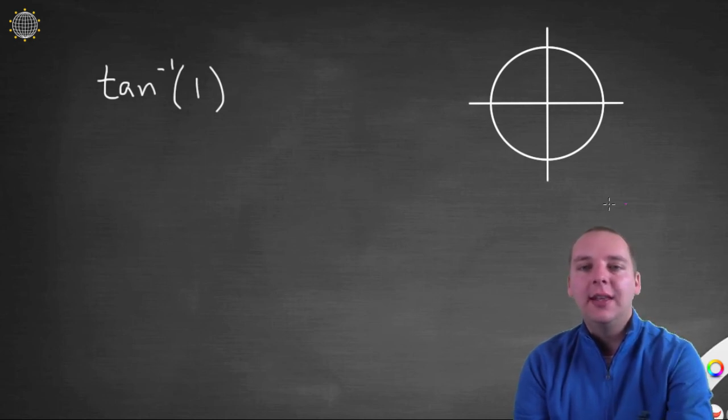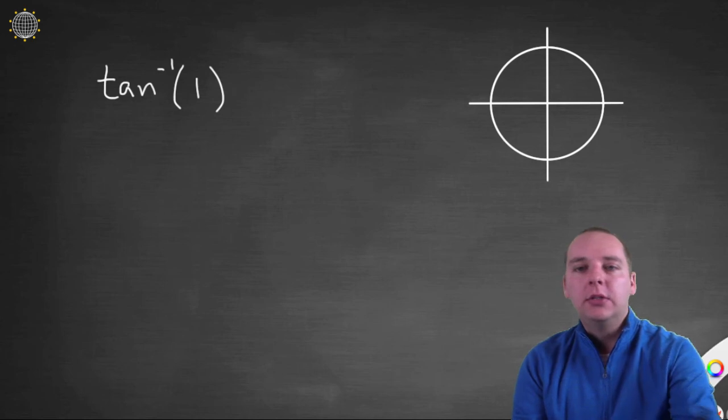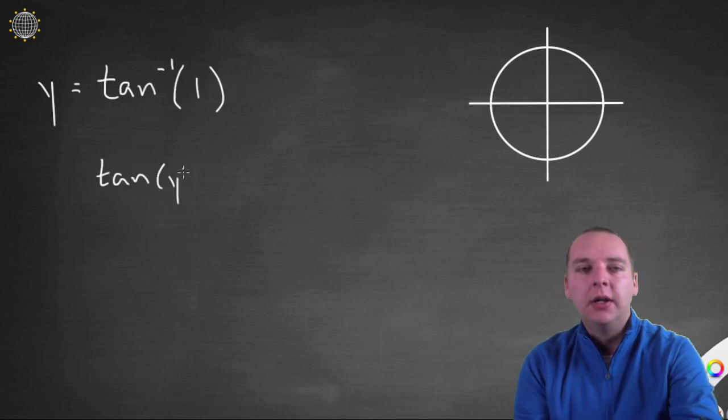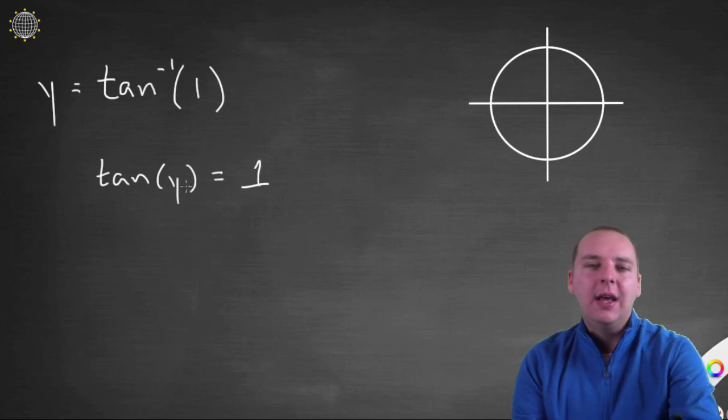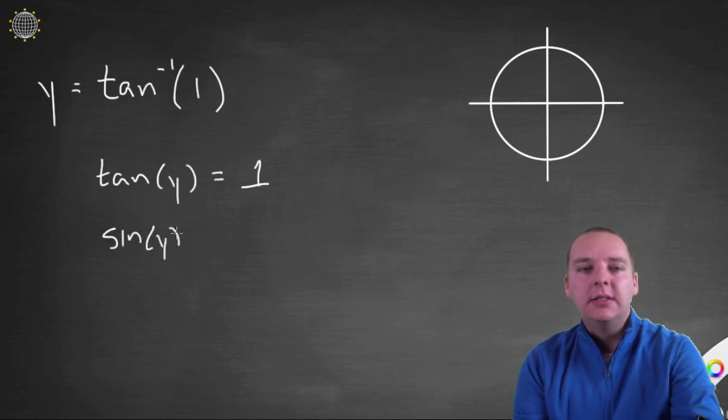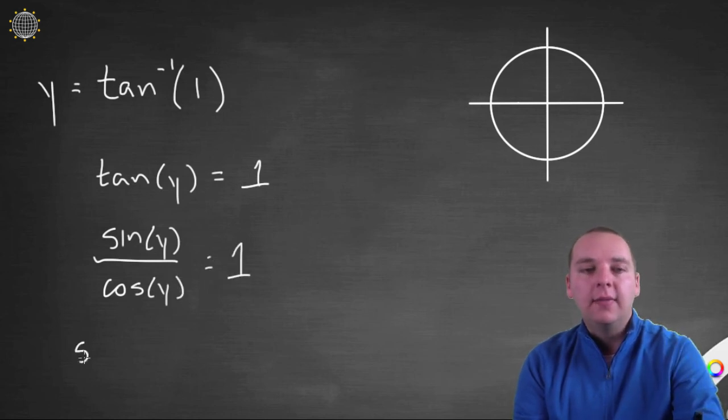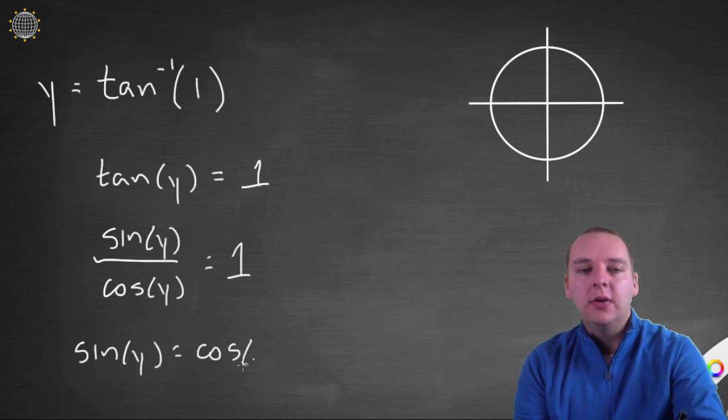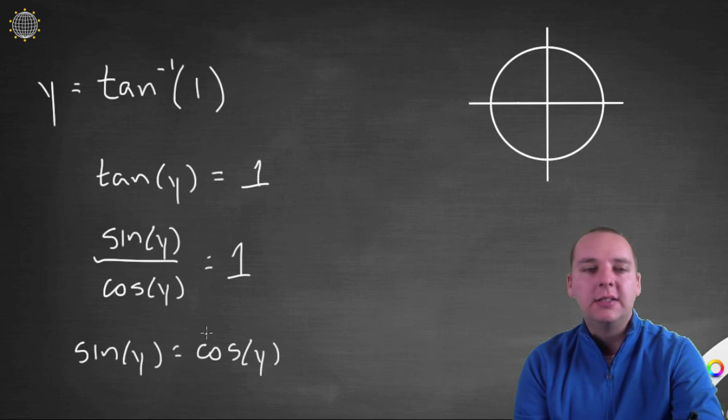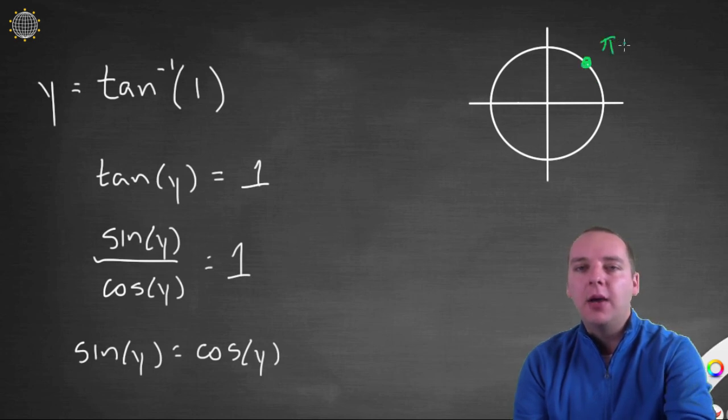Okay, so we're trucking right along. Alright, last one. Tan inverse of one. So we know the drill. We're going to set this equal to a value. And I've been writing y, but you don't have to write y. You could choose a different letter. So we say tan of y equals one. Now tangent is not immediately clear on the unit circle. Perhaps it would be easier to break this up as sine of y over cosine of y equals one. Or you might could say sine of y equals cosine of y, if you move the cosine over to the right hand side. So you think to yourself, where is sine and cosine the same?